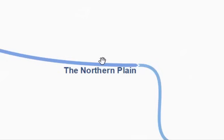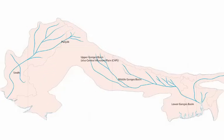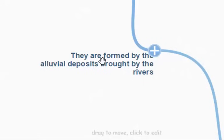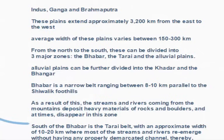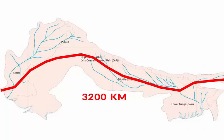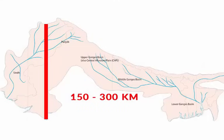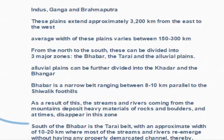Moving on to the northern plain — they are formed by the alluvial deposits brought by rivers. When running water takes all the soil from one place and deposits it at another, it forms a large bed of alluvial deposits, forming the northern plain. The three main rivers causing the formation of the northern plain are the Indus, Ganga, and Brahmaputra. The length of this plain extends approximately 3,200 km from east to west, and the average width is 150 to 300 km. From north to south, these can be divided into three major zones: the Bhabar, the Tarai, and the alluvial plains.